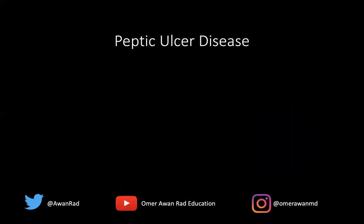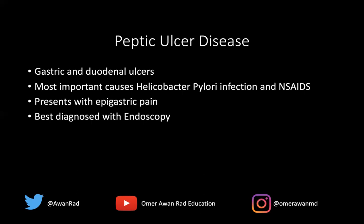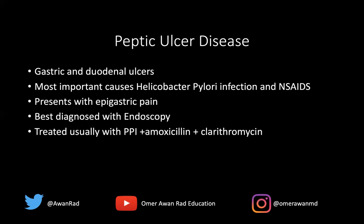I want to talk about peptic ulcer disease because it's an important cause of pneumoperitoneum stressed on the USMLE. We're typically talking about gastric and duodenal ulcers — they can perforate and cause free air in the abdomen. The most important causes of peptic ulcer disease are Helicobacter pylori infection and the use of NSAIDs such as ibuprofen or Advil. These have a high predisposition to causing PUD. It typically presents with epigastric or midline abdominal pain and is best diagnosed with upper endoscopy. Treatment is triple therapy: a proton pump inhibitor, amoxicillin, and clarithromycin to eradicate H. pylori.